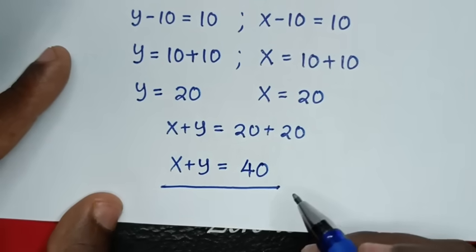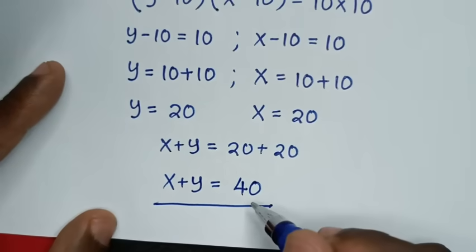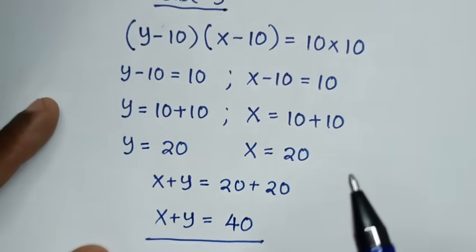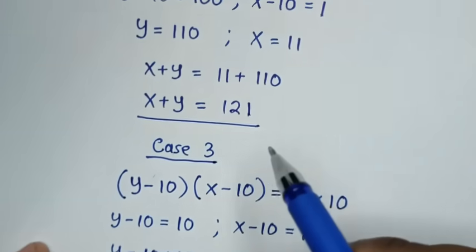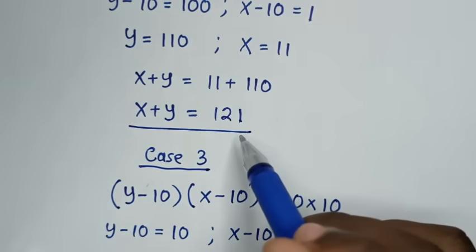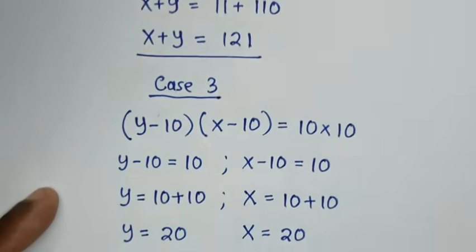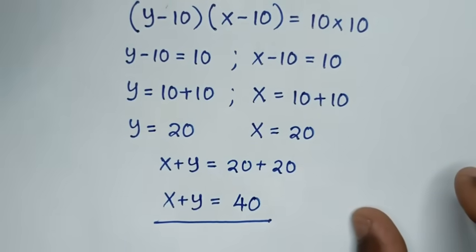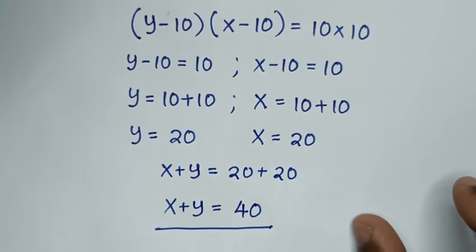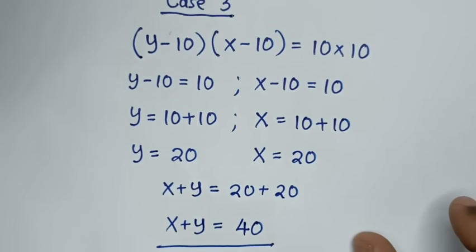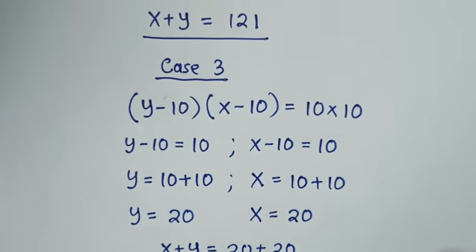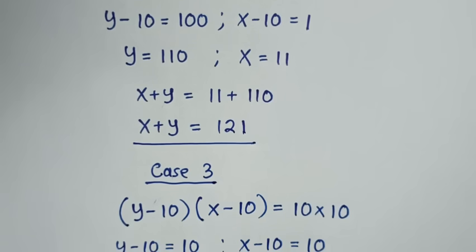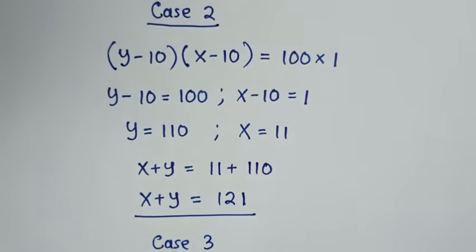So we have two solutions: x plus y equals 40, and x plus y equals 121. Thank you for watching. Don't forget to subscribe to my channel, and see you in the next video.